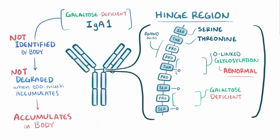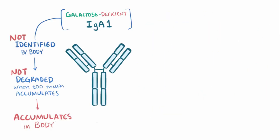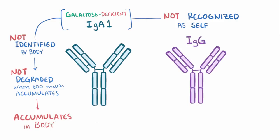In addition, it's thought that these galactose-deficient IgA1 antibodies are different enough from normal IgA1 antibodies that the body no longer recognizes them as self. In response, the body generates IgG antibodies that target the abnormally glycosylated residues, and these are known as antiglycan IgG antibodies.